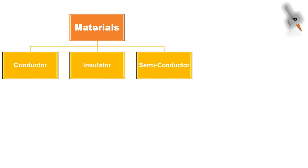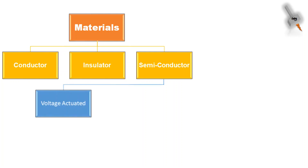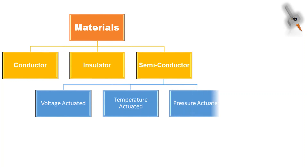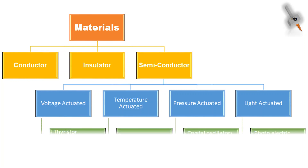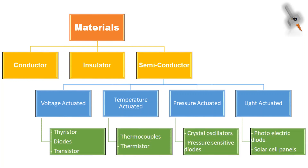Since we are discussing electronic materials, I will divide the semiconductor material further into voltage actuated, temperature actuated, pressure actuated, and light actuated semiconductor material. The examples of each type of material are also given here.